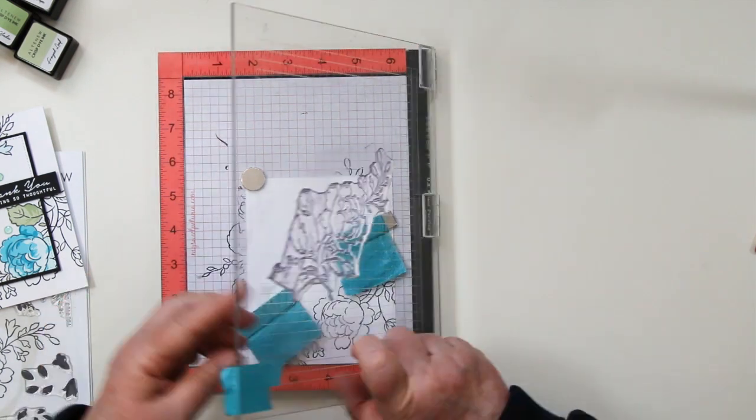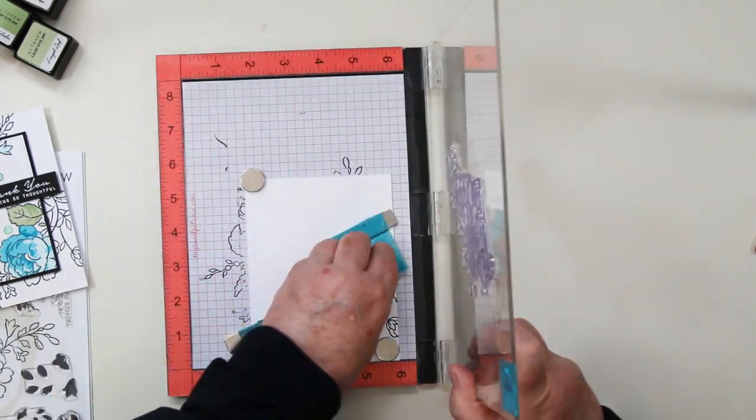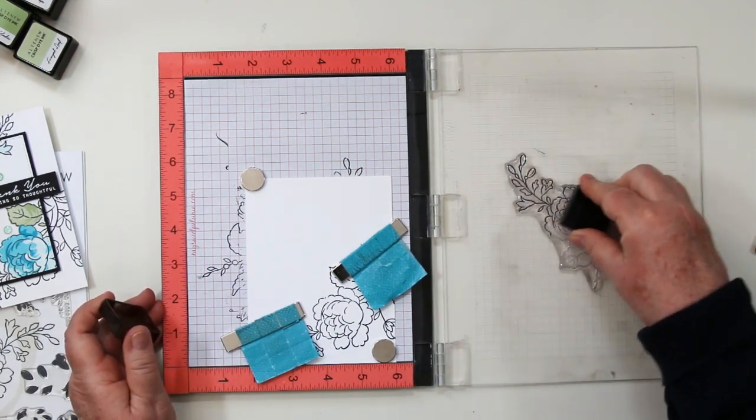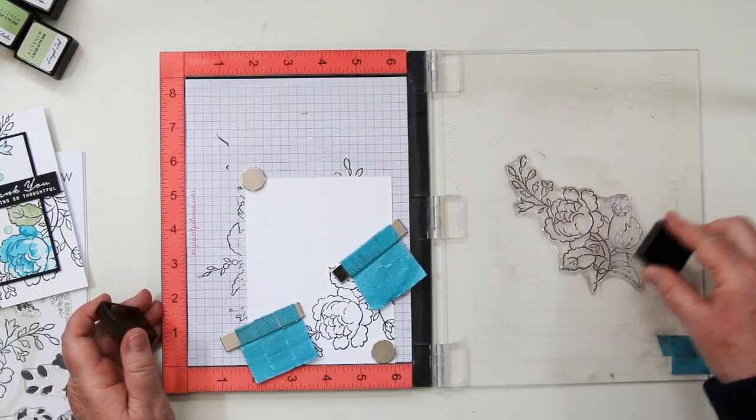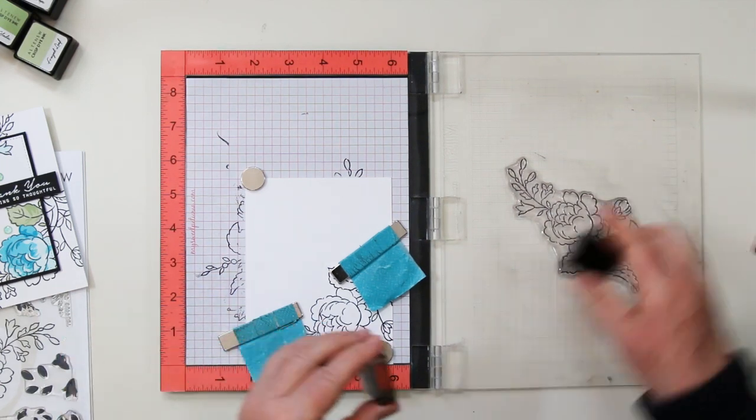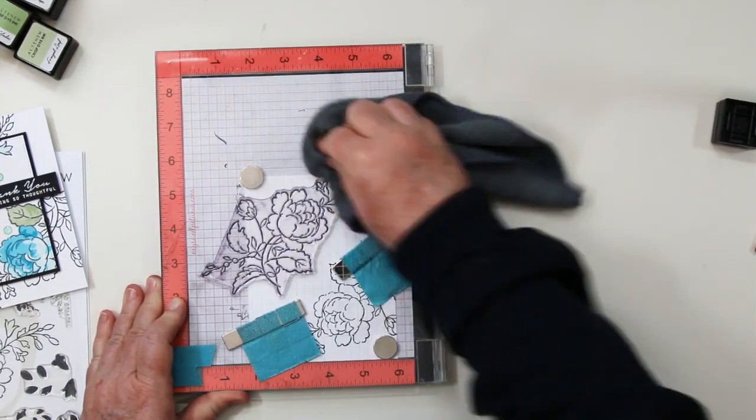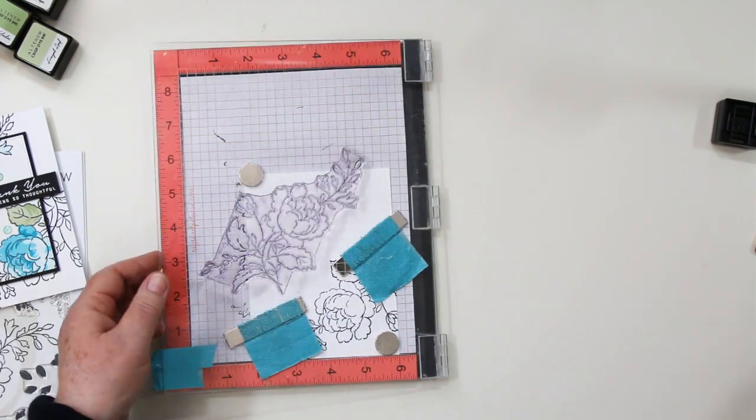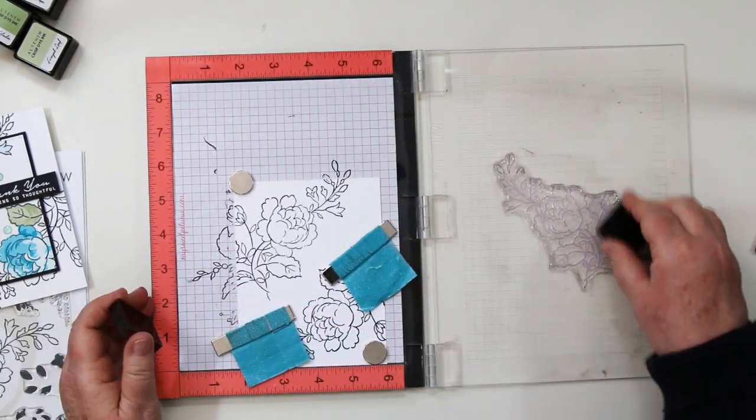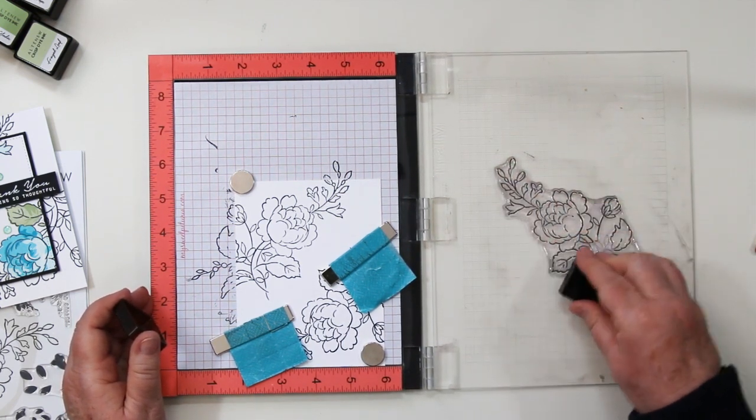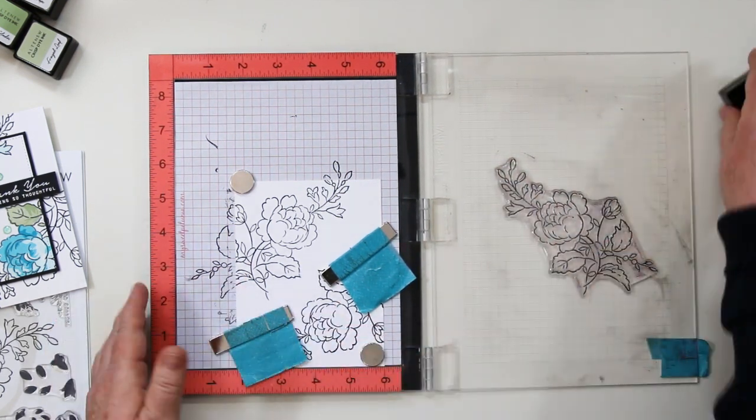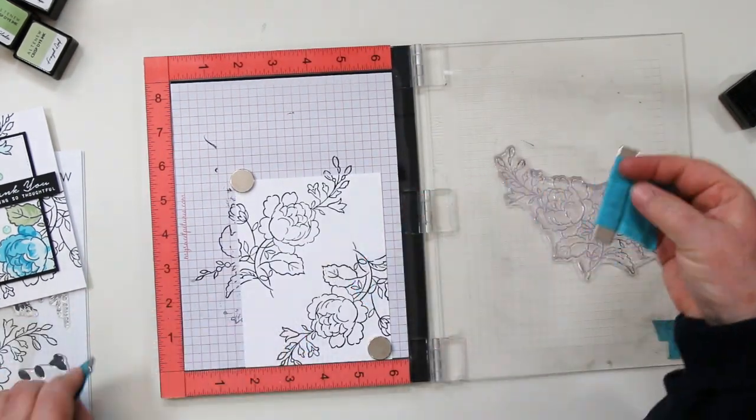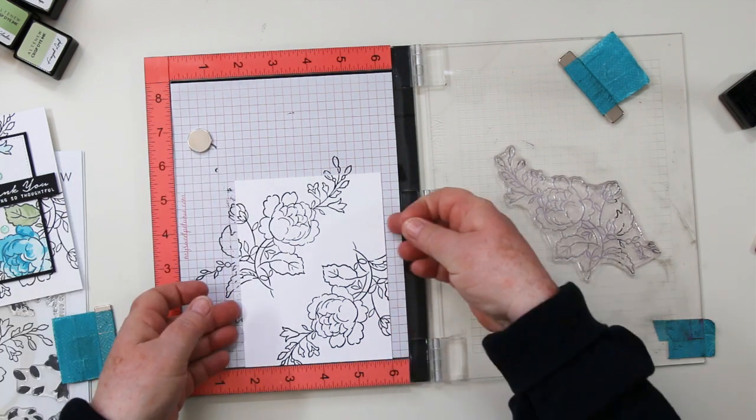Add your other two magnets just to make sure that it doesn't move. Again, I'm inking with the jet black, doing a double stamp of it. Now, this is going to be the background. As you can tell when you look at the card that's over on the left-hand side, the card front is actually in black and white and we're going to line up the second image with that first one.